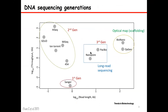Before we get into nanopore sequencing technology, I'd like to give a brief introduction about what is the DNA sequencing generation. The DNA sequencing is decoding the genetic information of our DNA. There have been various technologies developed over the course of time. Sanger sequencing is the first generation sequencing technology, developed based on the chain-termination method. The second generation sequencing is mostly sequencing-by-synthesis, like Illumina-based, SOLiD, or 454 technologies.